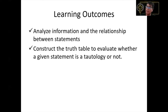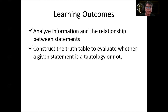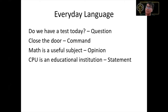Our learning outcomes for this chapter are to analyze information and the relationship between statements, and to construct a truth table to evaluate whether a given statement is a tautology or not. In everyday language, we have different kinds of statements.